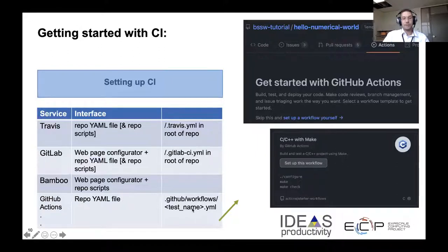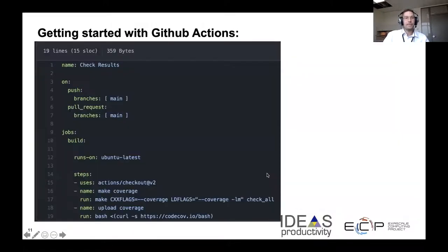For GitHub Actions, when you set it up, you make a testname.yaml file — you can name this whatever you want. If you click on the Actions button inside of GitHub, it will guide you through an example that you can set up as a workflow and brings you to a page where you can edit the workflow itself. Every workflow file looks similar and is simple enough. Basically it says when to run the test, how to run the test, and also where to run the test.